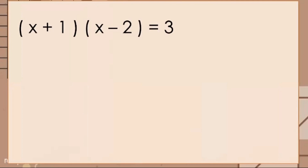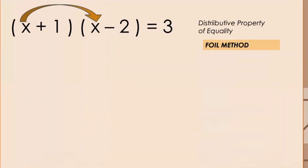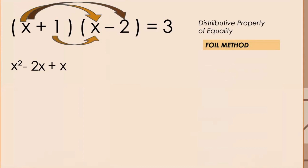Next, we have (x + 1)(x − 2) = 3. This equation contains parentheses, so to remove them we apply the distributive property using the FOIL method. We multiply x by x to get x², then x by −2 to get −2x, then 1 by x to get +x, and finally 1 by −2 to get −2. So we have x² − 2x + x − 2 = 3.